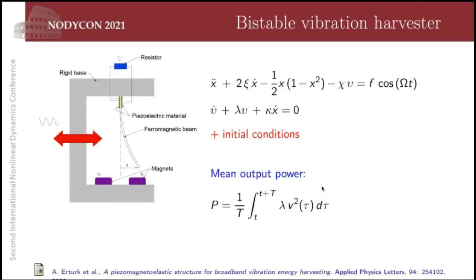So the system we are interested in can be seen here. It is composed by a rigid base which moves according to a harmonic excitation. And attached to this base in the upper part, you have a ferromagnetic beam, which deforms in consequence of the motion induced by the rigid base. And in the bottom part, you have a pair of magnets, which induce a magnetic field that will interact with this ferromagnetic beam and generate large amplitude vibrations. This is a classical vibration energy harvester.